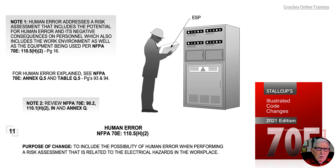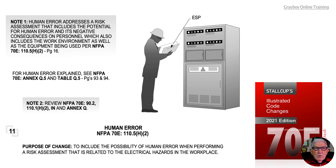Let's review note 1 to the left of the illustration. Human error addresses a risk assessment that includes the potential for human error and its negative consequences on personnel, which also includes the work environment as well as the equipment being used, as outlined in 70E 110.5 H2 on page 16.